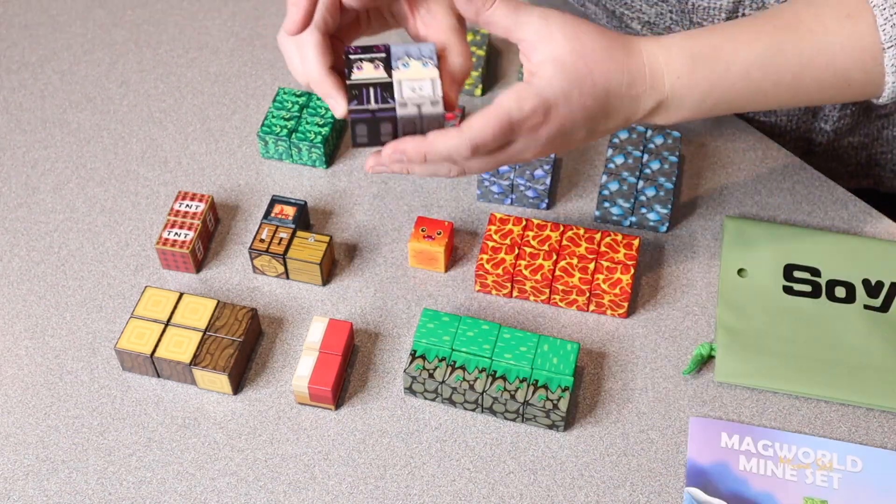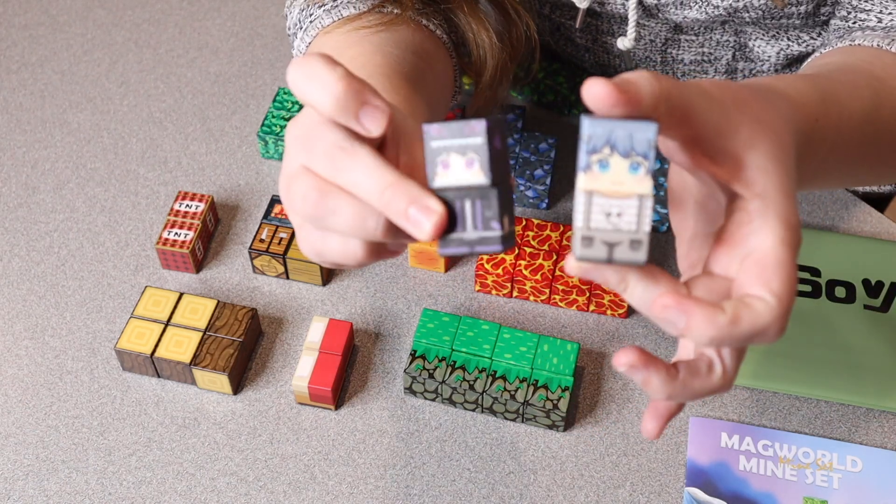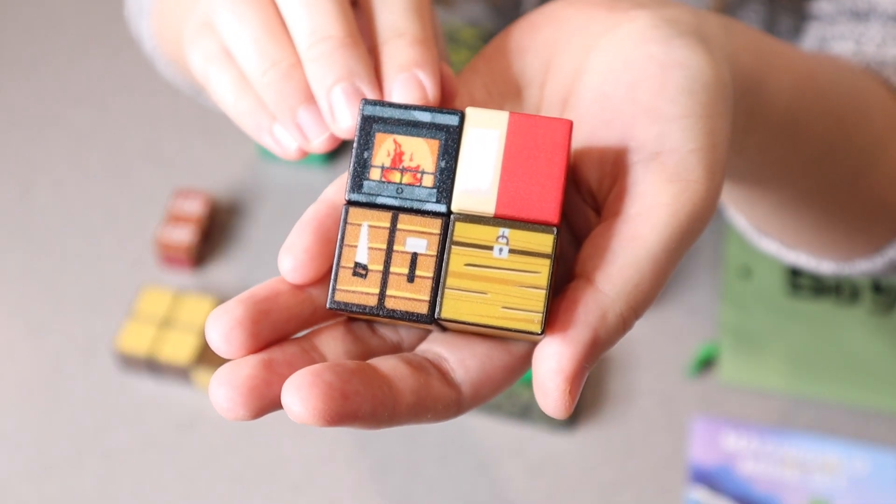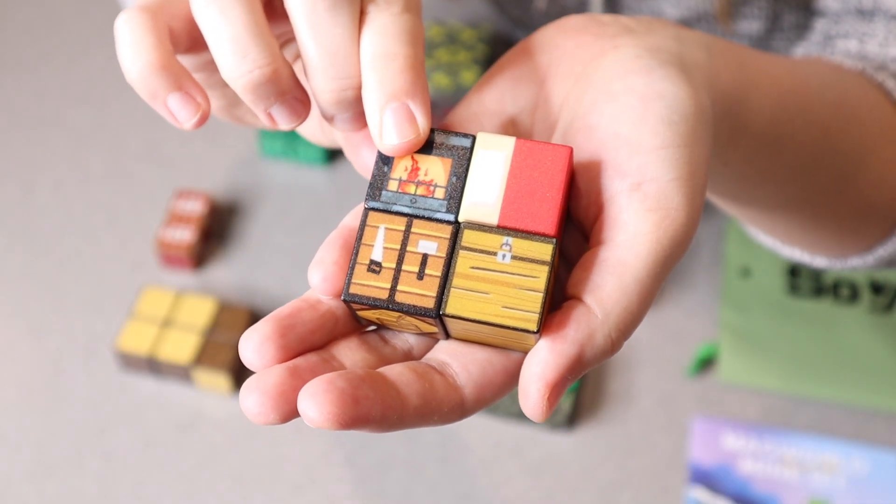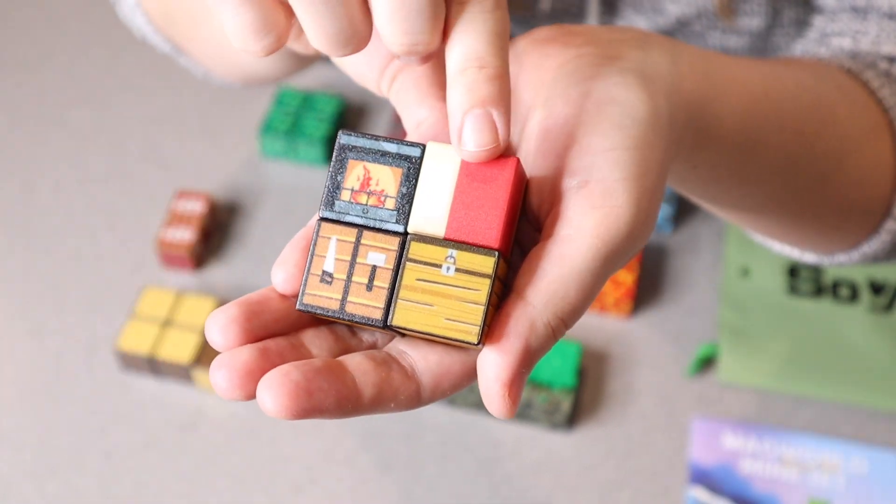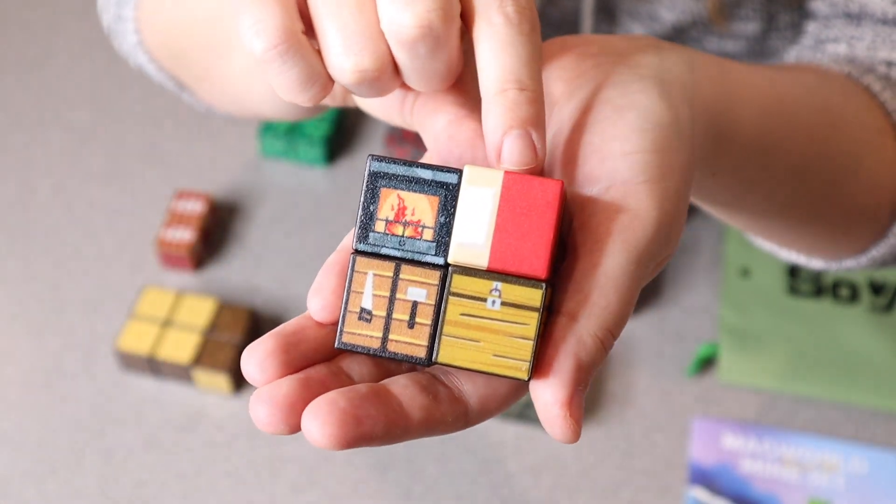Some of the fun things that come inside this set, you can see we have a couple different people here. You can switch their different outfits and you can see these fun vibrant colors. We have things like a fireplace, a little chest, a little treasure chest here as well as accessories like a bed.